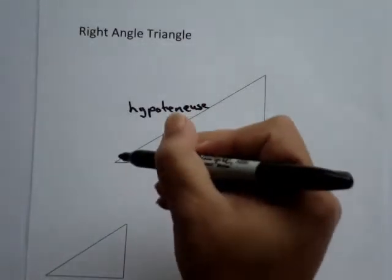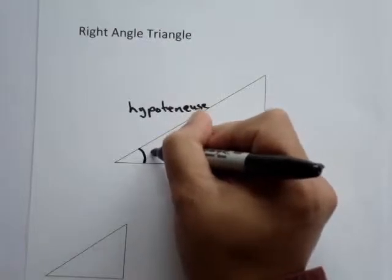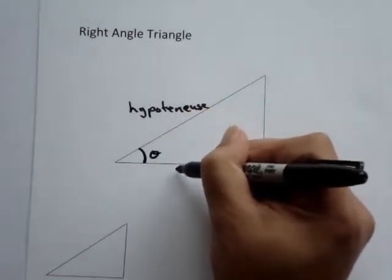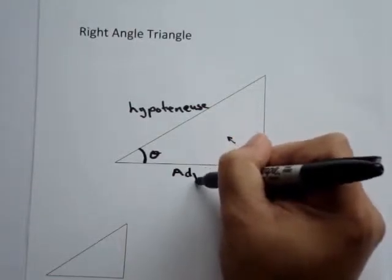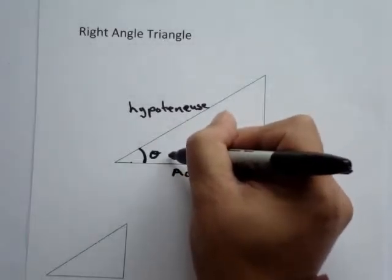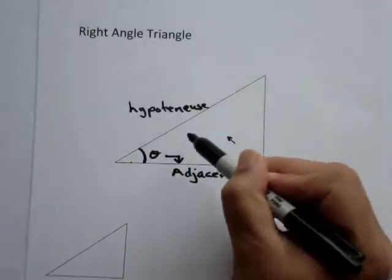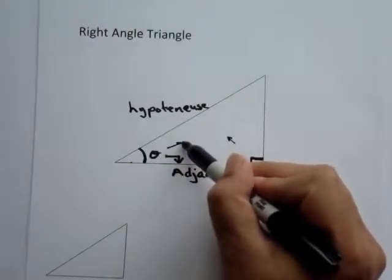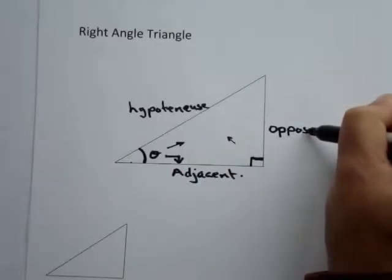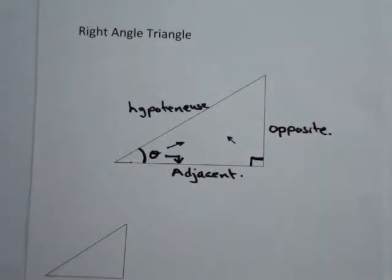When we're considering an angle within the right angle triangle — say we're considering this angle which is theta — the side of the triangle next to the angle is called the adjacent. And when we're considering directly across from the angle in question, the angle theta, this is the opposite. So this is the side opposite the angle, and this is the side of the triangle adjacent to the angle.